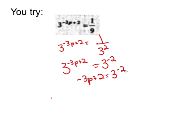So you get 3 to the negative second. I'm going to subtract 2 from both sides. So p is equal to negative 4 thirds.